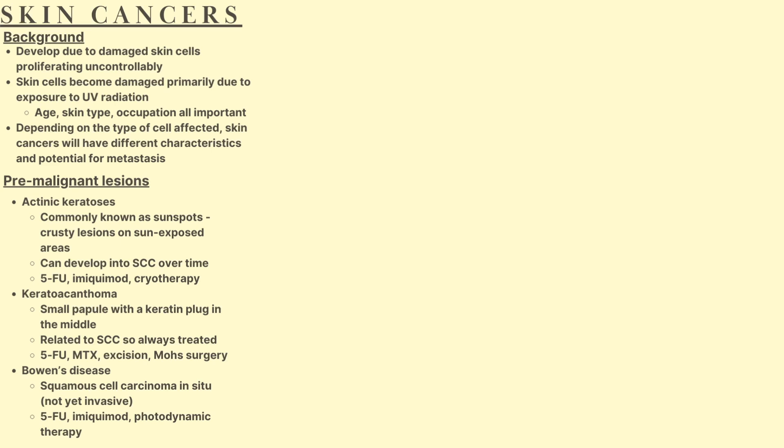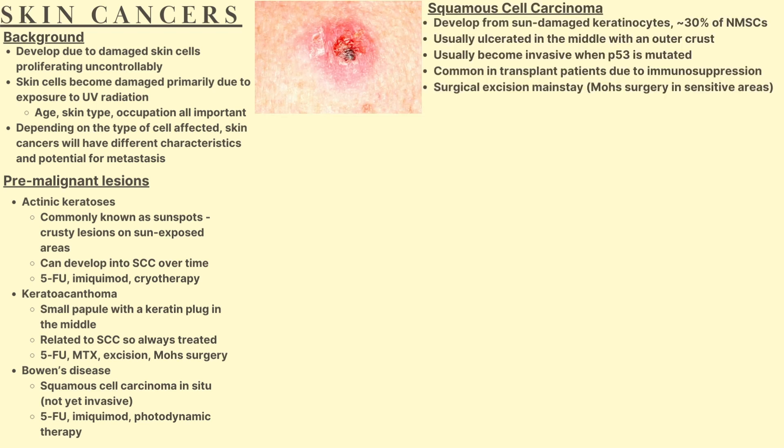The next lesion is keratoacanthoma, which is a small papule with a keratin plug in the middle. It's related to SCCs and is treated with 5-FU, methotrexate, surgical excision, or Mohs micrographic surgery, which takes little bits of skin out at a time and is generally used in more sensitive areas. The last pre-malignant lesion is Bowen's disease, which is squamous cell carcinoma in situ — still at the level of the epidermis, not yet invasive. It can be treated with 5-FU, imiquimod, or photodynamic therapy.